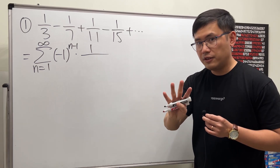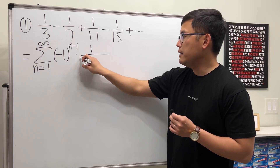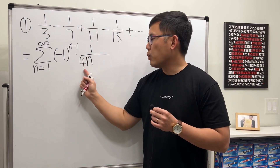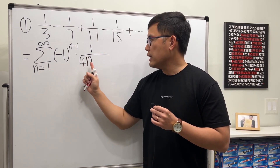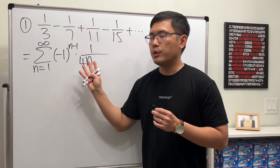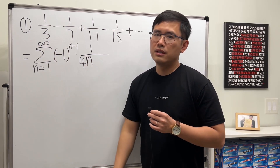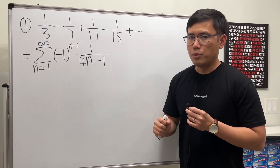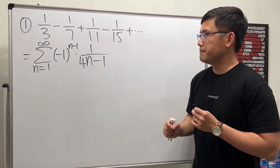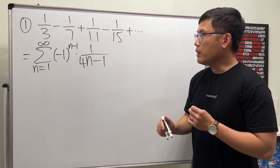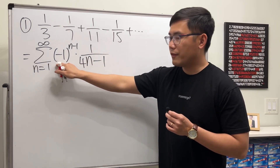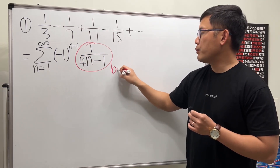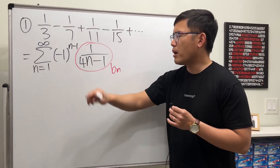The 4 is the common difference and is the coefficient of n, since this is an arithmetic sequence. When n equals 1, 4 times 1 is 4 — how can we get to 3? We need a minus 1. That's how you come up with the formula for this series. This right here is the bn portion — the non-negative part.